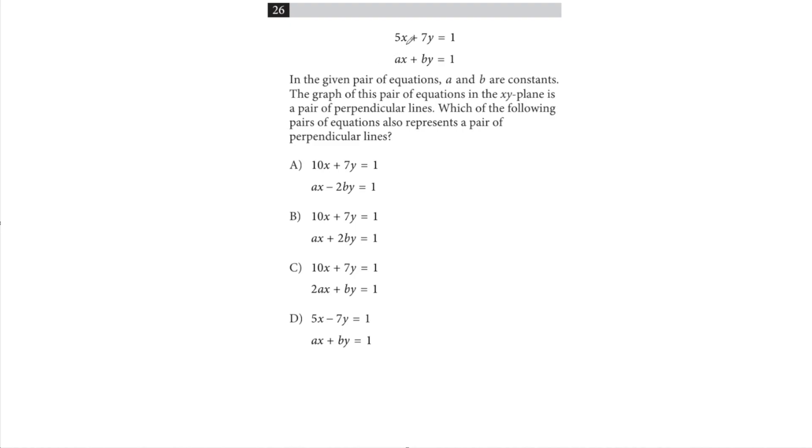So we know that for perpendicular lines, the slopes have to be opposite reciprocals of each other. And the thing that determines the slopes is these coefficients of our X and Y variables, right? So we just know that there needs to be a proportional relationship.